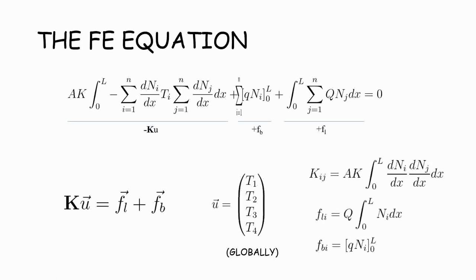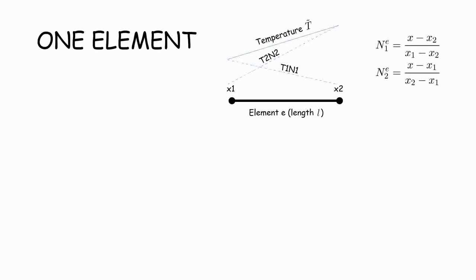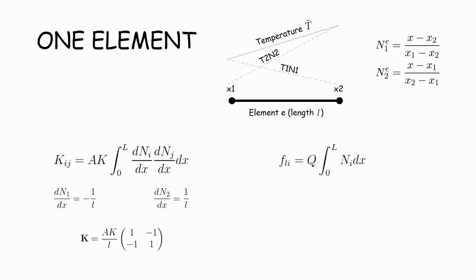So let's take it one element at a time. Working with one element just means that the global and local shape functions are the same. So we're not going to run into any trouble. So here's our element. Let's call it e. It has a length of small l. These are the shape functions just to have them handy. kij is this. So just do the math. You get k is equal to AK over l times 1 minus 1 minus 1, 1. Do the same for fl. It becomes Q over 2 times 1, 1. And we will do the boundary vector at a global level later.